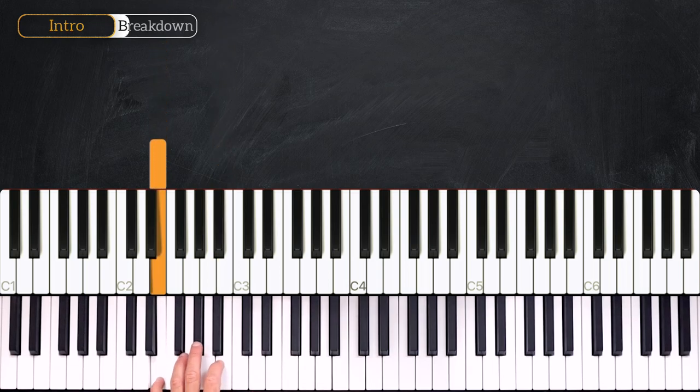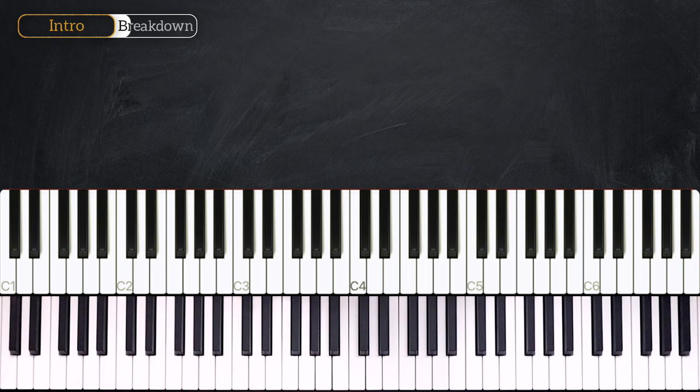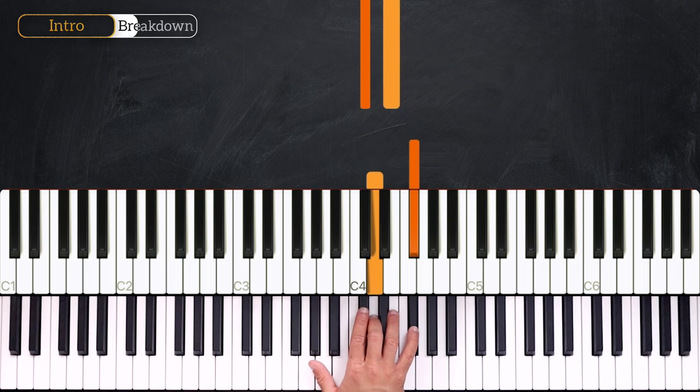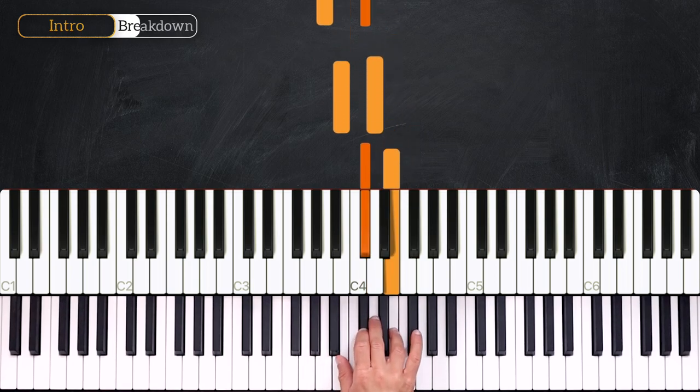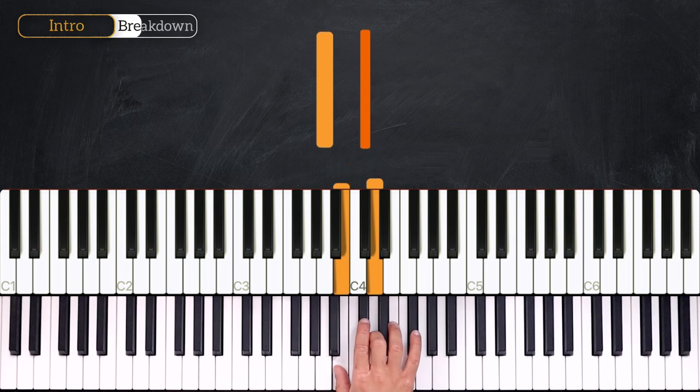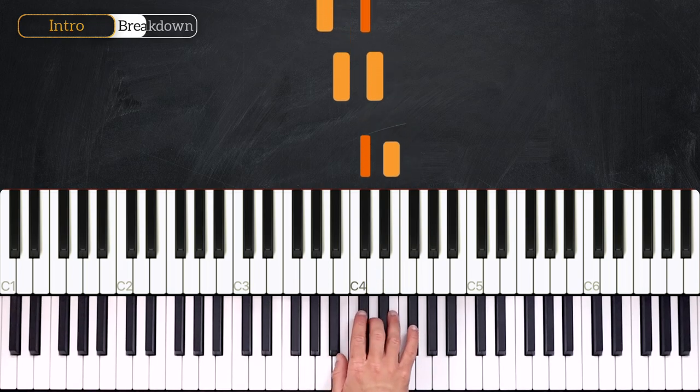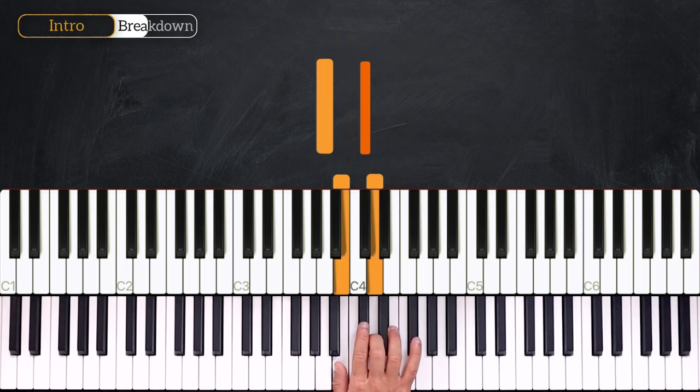Alright, so the right hand is going to play in thirds. We'll play D and F sharp twice, then C sharp E into B D and A C sharp. It will go like this: one two three four.